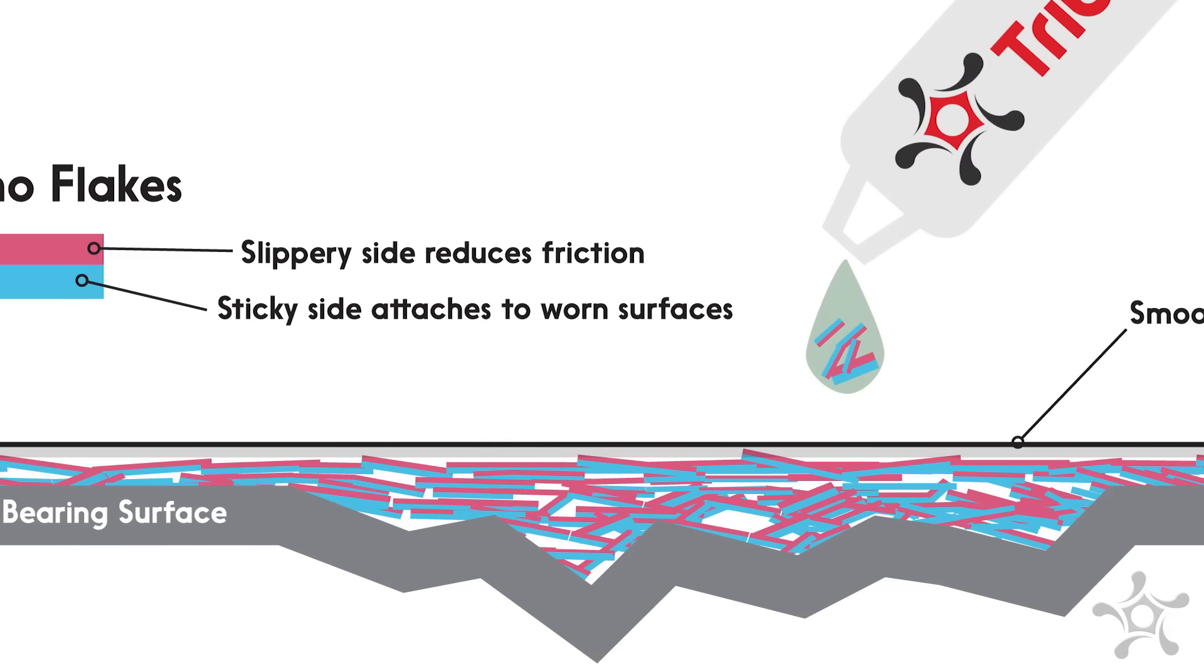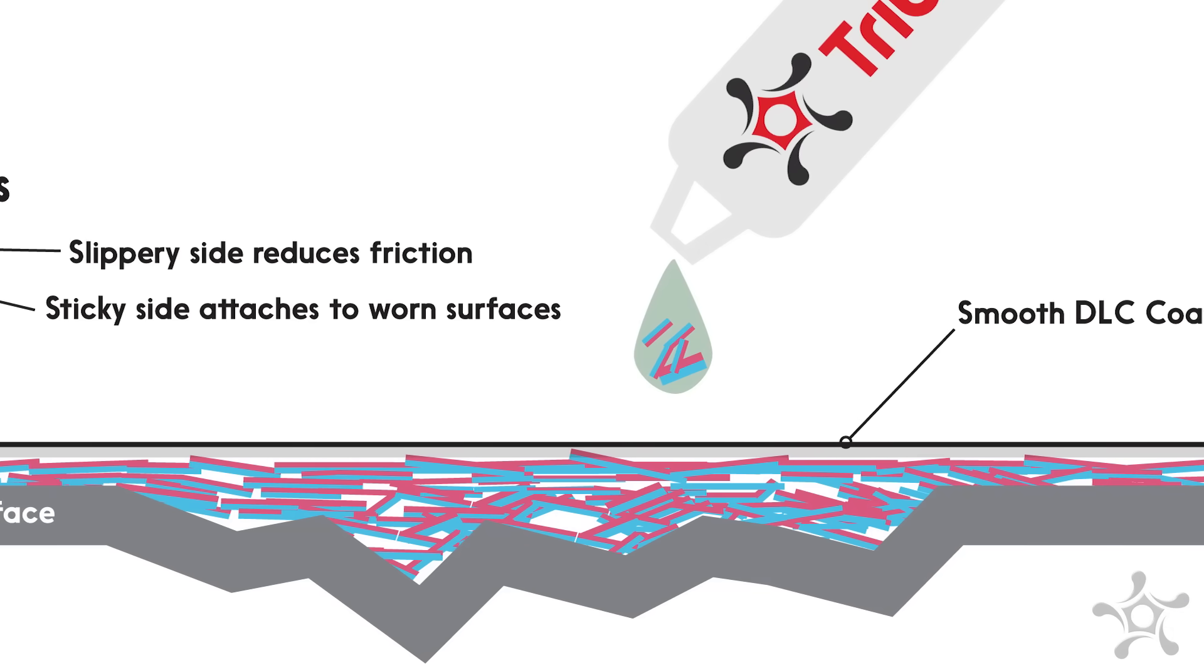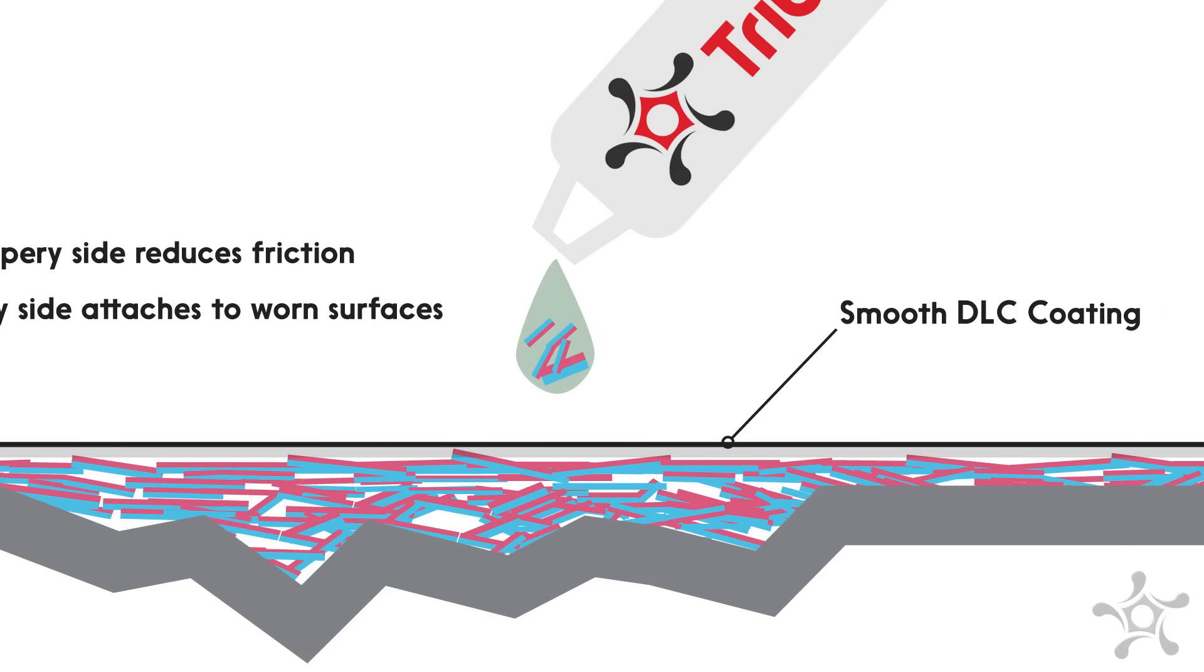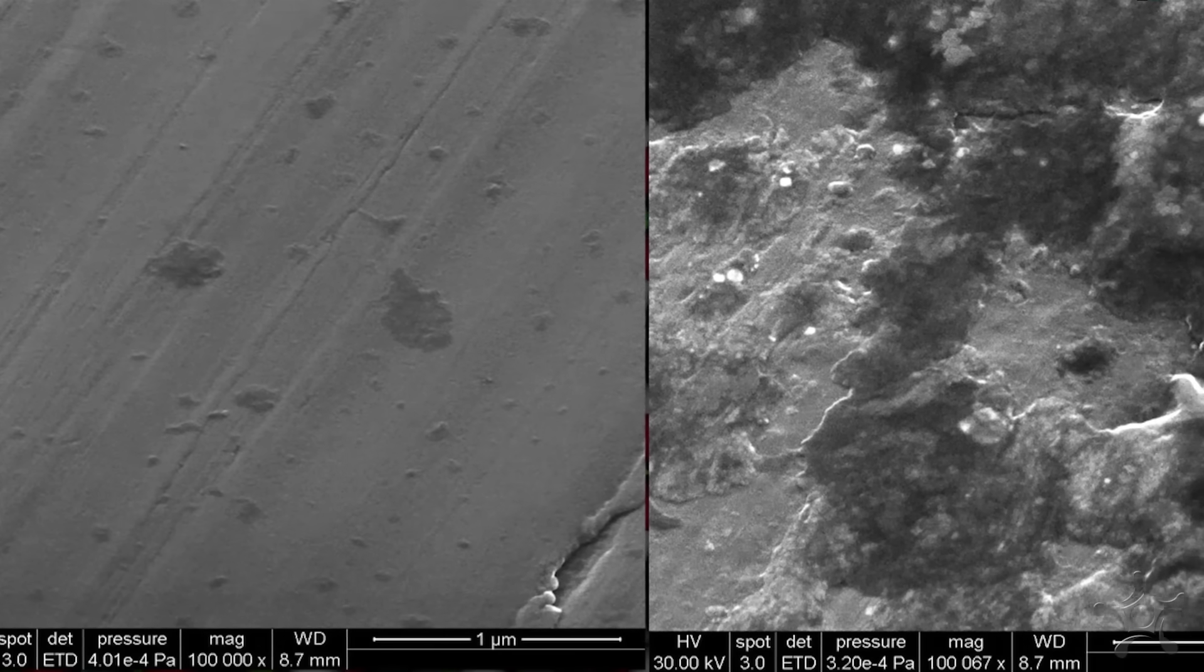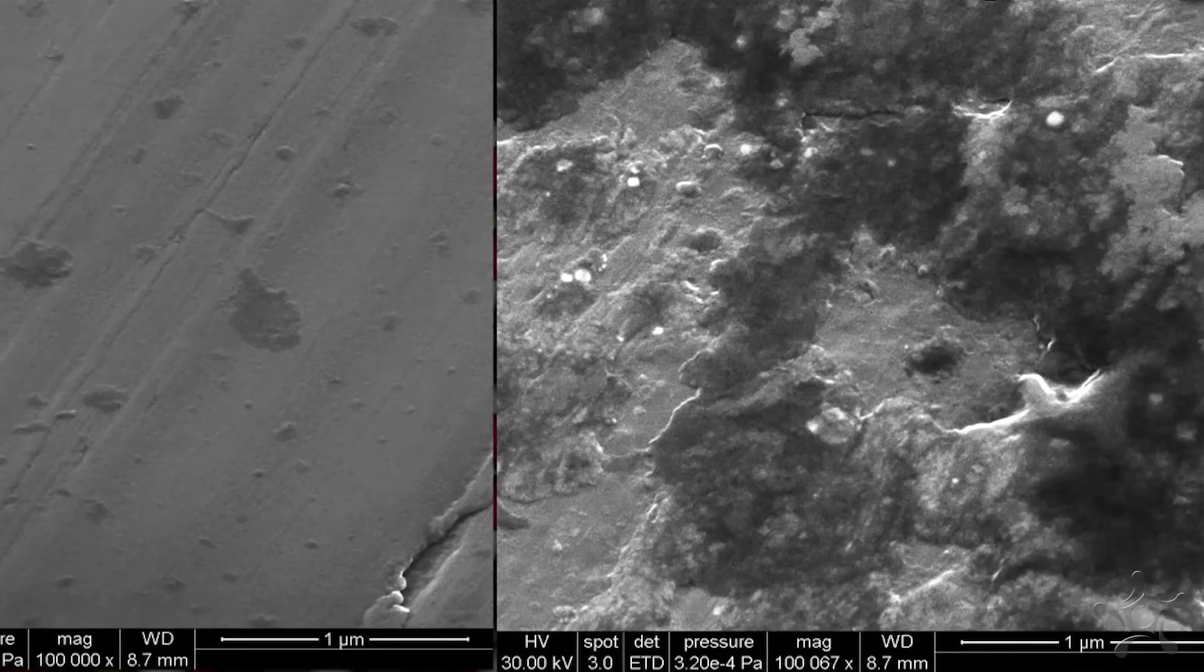Activated by heat and pressure at high-friction locations, our nanosheets build up in worn areas particle by particle. The result is a permanent, low-friction, diamond-hard armor that leaves your steel more resilient than ever.